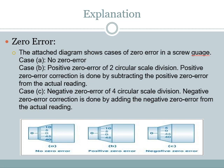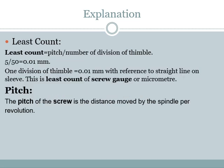In the next slide, least count. Least count is the smallest value which can be measured by the screw gauge. The formula for least count is pitch divided by the number of divisions of the circular scale or thimble.